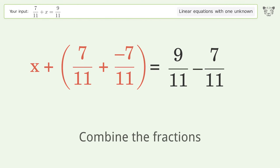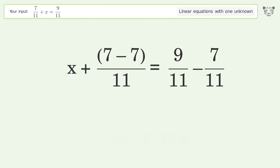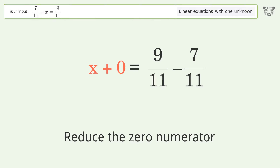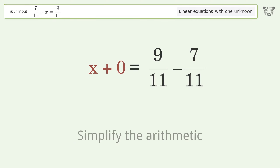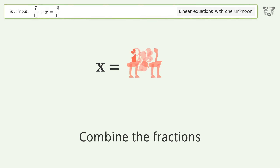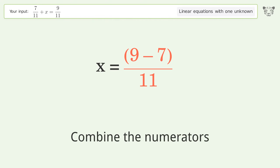Combine the fractions and combine the numerators. Reduce the zero numerator and simplify the arithmetic. Combine the fractions again and combine the numerators.